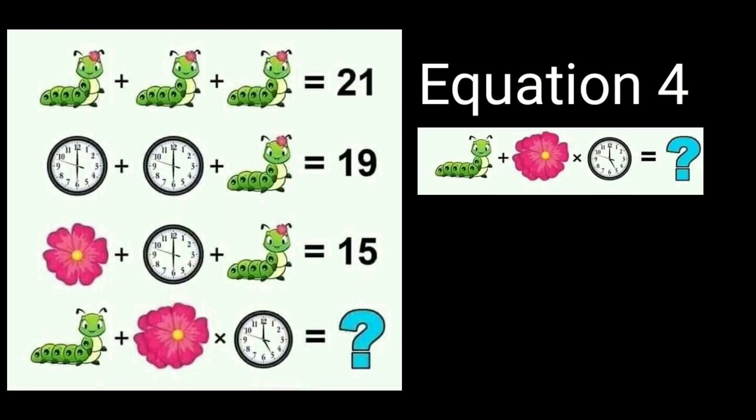Finally, we are in the last equation, equation 4. Look at this last equation. There is one caterpillar, two flowers are there and one clock. Look at the clock properly. The clock shows 5 o'clock, so the value of clock is equal to 5. And the flowers - there are two flowers. The value of flowers is 2, 2 into 2 is 4.